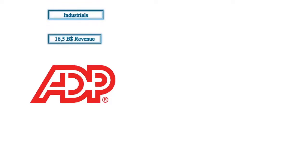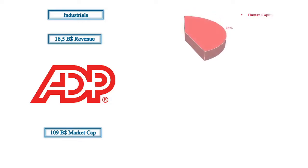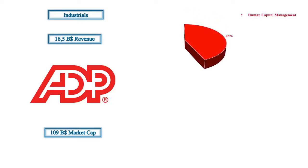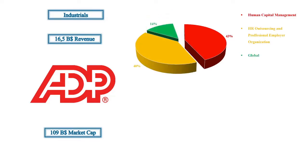Last year they generated a revenue of 16.5 billion dollars and they have a market capitalization of 109 billion dollars. ADP made their money by helping companies manage their employees, benefits, payrolls and other things. The revenue of ADP can be divided into four main segments: Human Capital Management with 43%, HR Outsourcing and Professional Employer Organization with 40%, Global with 14%, and Interest of Funds held by clients with 3%.